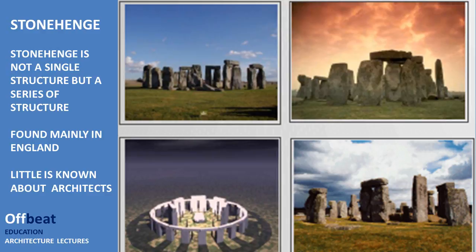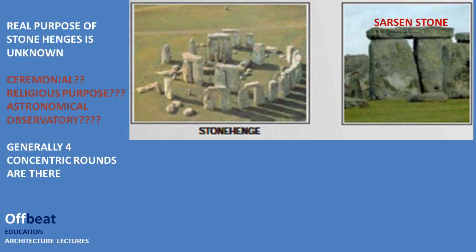Little is known about the architects of the Stonehenge. The real purpose of Stonehenge is also unknown. It is a mystery what was the use of such stones in large numbers. You can see there are four concentric rings of stone, and in some places one stone is kept on top of two, which is known as the capstone. Some scholars believe they were used for ceremonial purposes, some for religious purposes, and many argue they were actually an astronomical observatory. The real purpose is not clear.